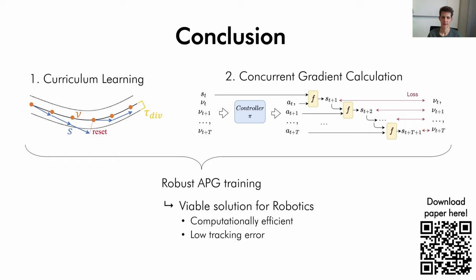So in summary, we can achieve robust APG training with the two measures of curriculum learning and calculating gradients concurrently. This allows us to achieve computationally efficient controllers with low tracking error, making APG a viable solution for robotics.